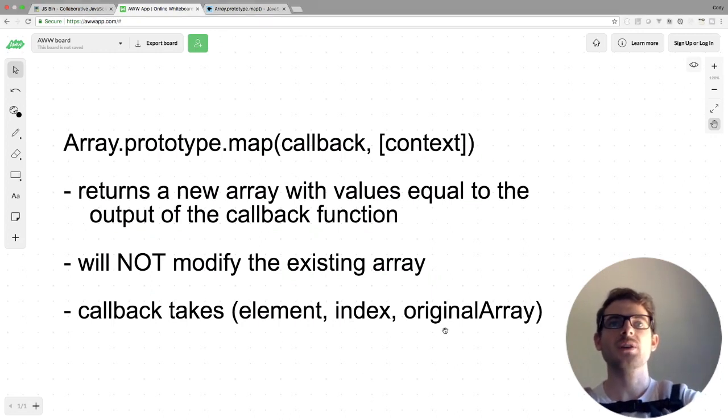And what this function does is it's going to return you a new array with the same length of the old array, and every element in that new array is going to be the output of the function that you've passed into the callback. So it's going to apply the function to every single element, and then the output is going to be your new elements. This does not modify the existing array. It's going to return a brand new array with the same length.